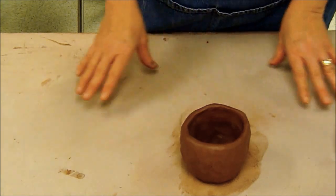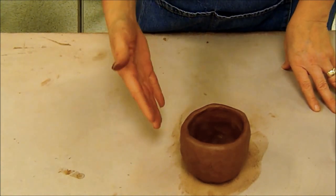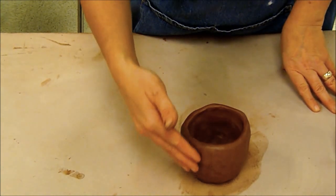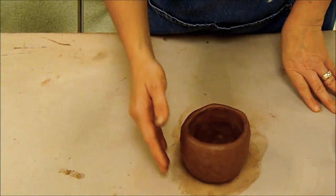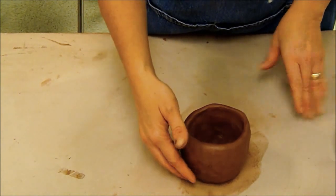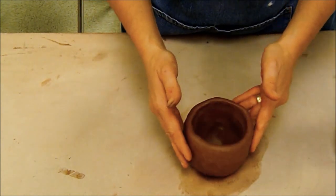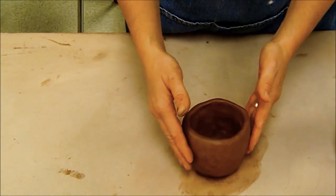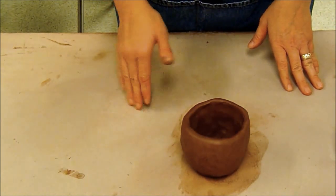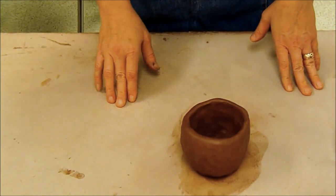Now once you have the pinch form made then on that very first day we should be able to smooth this outside a little bit more so it's not quite so lumpy. If you don't have time to do it on the first day you can do it on the second day. You'll just save yourself a little bit of time if you do it now.